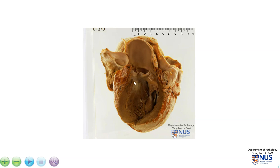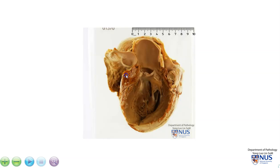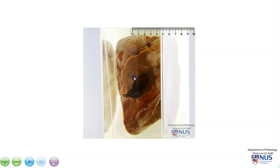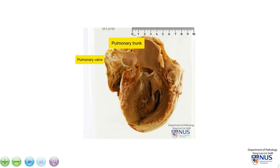This is a specimen of the heart and the left ventricle has been cut open. So we are looking at the aorta, the aortic valve, and this is part of the mitral valve. And over here, if we rotate this, this is the right ventricle and this is the pulmonary trunk with the pulmonary valve.